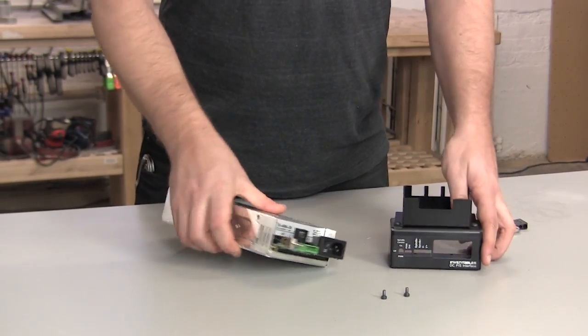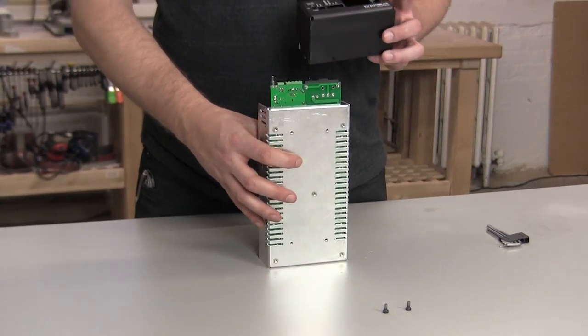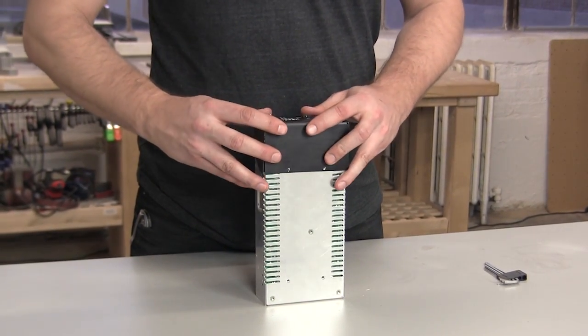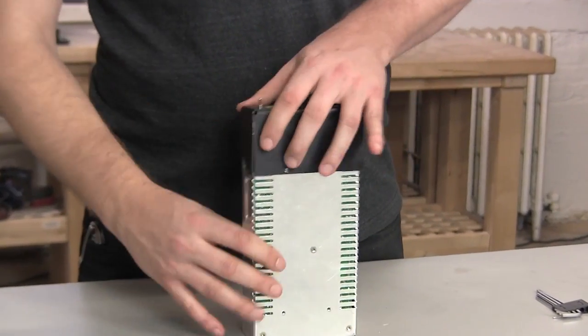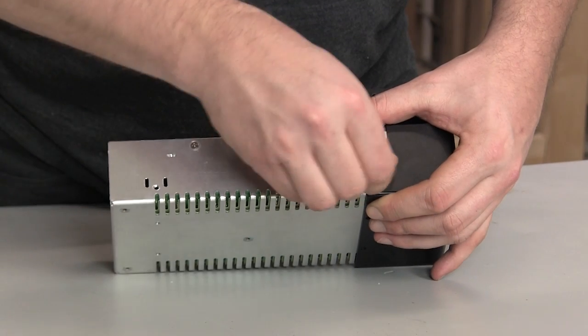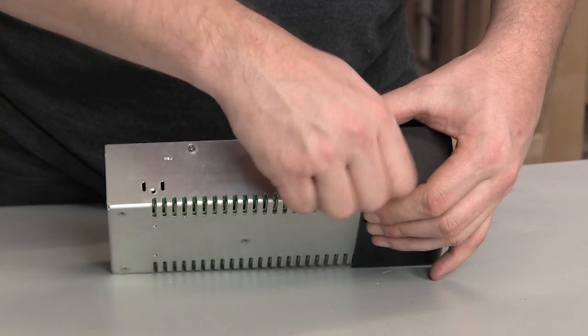Next slide the power supply interface over the circuit board. And use two screws on either side of the interface to attach the interface to the power supply.